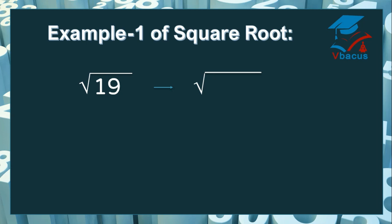Let us find out the square root of 19. It is not a perfect square number, so we have to see where 19 falls. 19 falls in between 16 and 25, and 16 is more closer to 19, so we will take 16. 16 plus 3 becomes 19. The square root of 16 is 4.